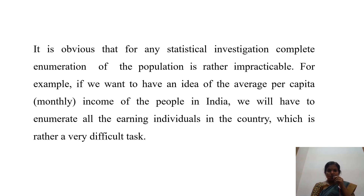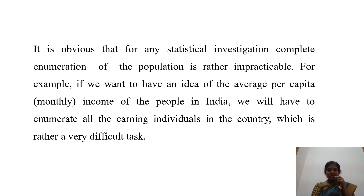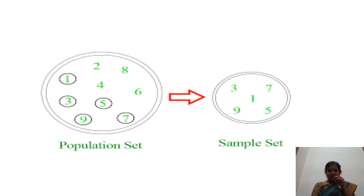It is obvious that for any statistical investigation, complete enumeration of the population is rather impracticable. For example, if you want to have an idea of the average per capita or monthly income of the people in India, we will have to enumerate all the earning individuals in the country, which is rather very difficult. So in that type of situation we will depend on the sample. In this diagram, you can easily understand the difference between population set and sampling set.